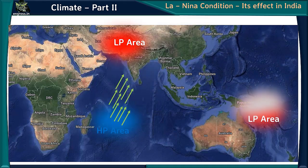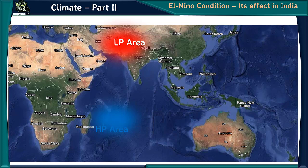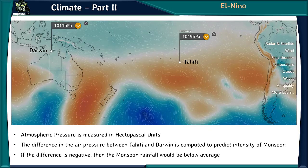El Niño can have devastating effects in India: cattle die due to water scarcity, millions of people suffer, and Indian agriculture — heavily dependent on monsoon — suffers greatly. Atmospheric pressure is measured in hectopascal units, and the difference in air pressure between Tahiti and Darwin is computed to predict monsoon intensity. If the difference is negative, monsoon rainfall will be below average.